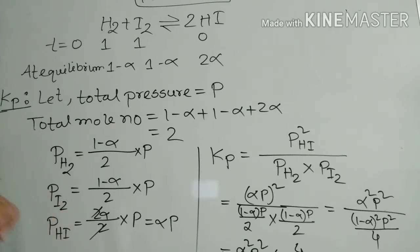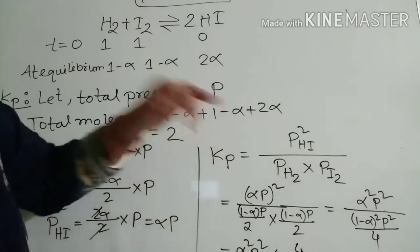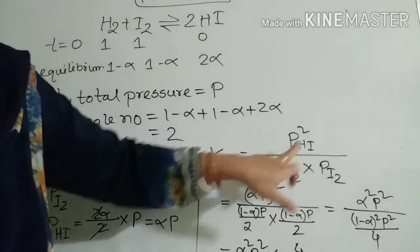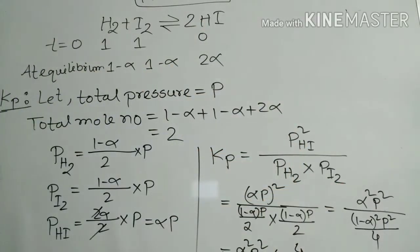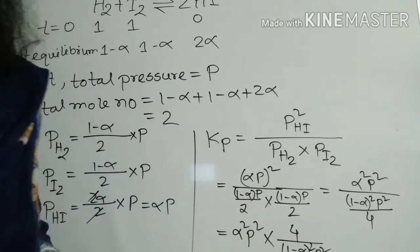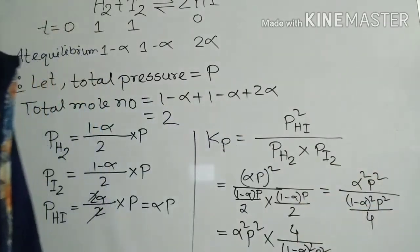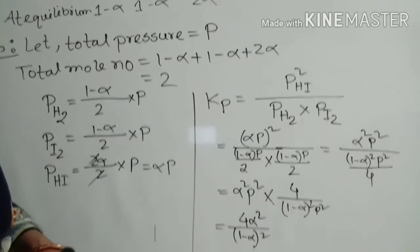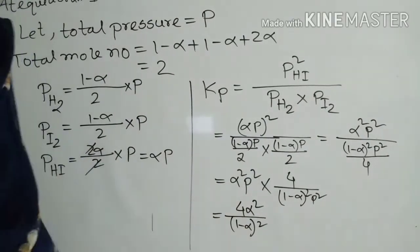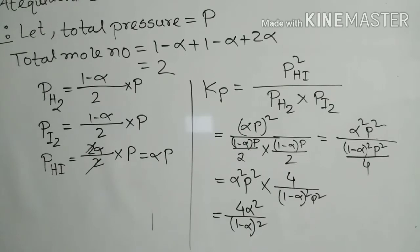The partial pressure of I₂ equals (1−α)/2 × P. The partial pressure of HI equals 2α/2 × P, which simplifies to αP. To derive Kp, we substitute: Kp = (αP)² / [(1−α)P/2 × (1−α)P/2]. Solving this gives Kp = 4α² / (1−α)². This is the equation of Kp for the synthesis reaction of hydrogen iodide.